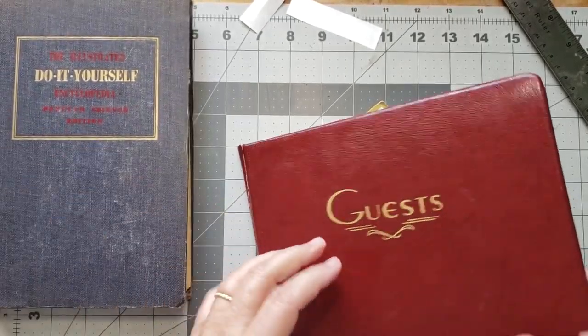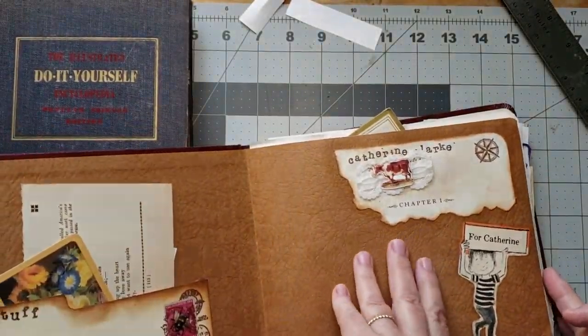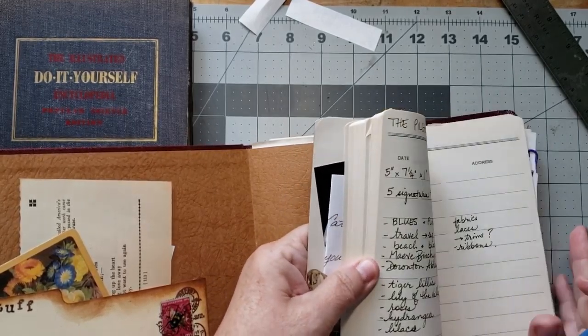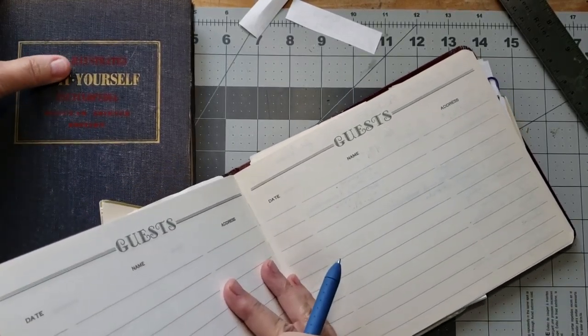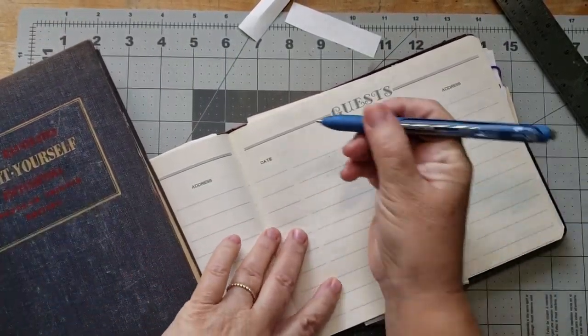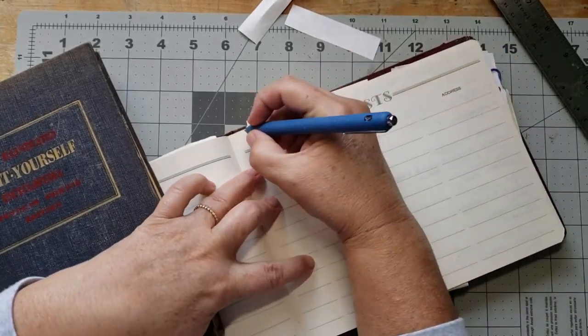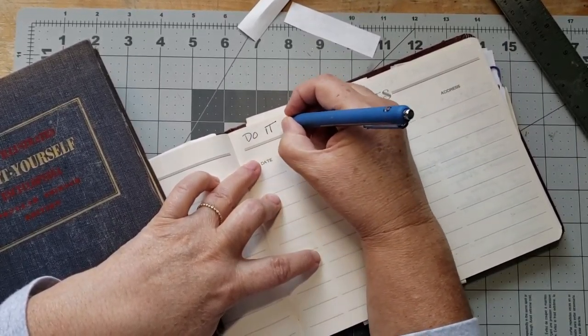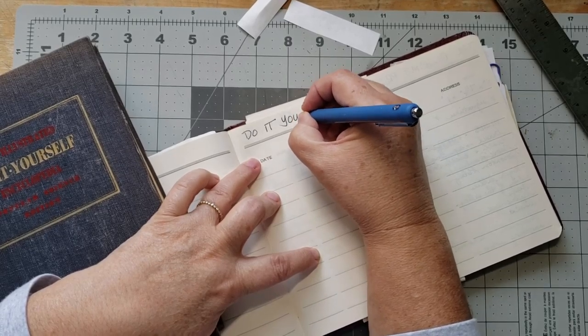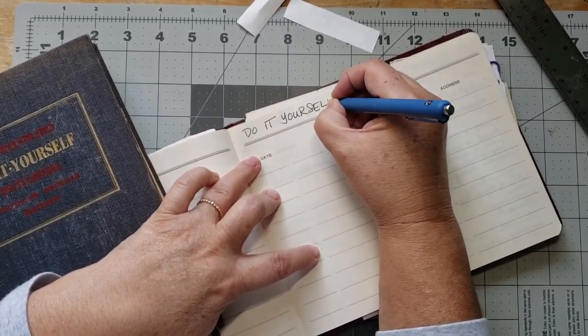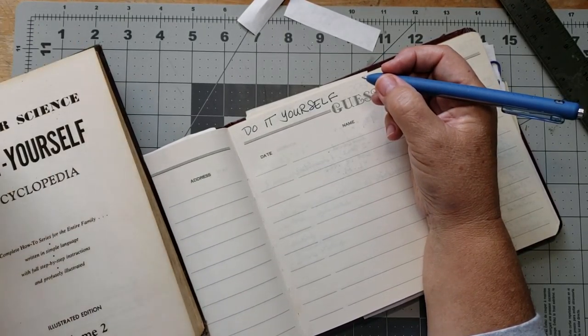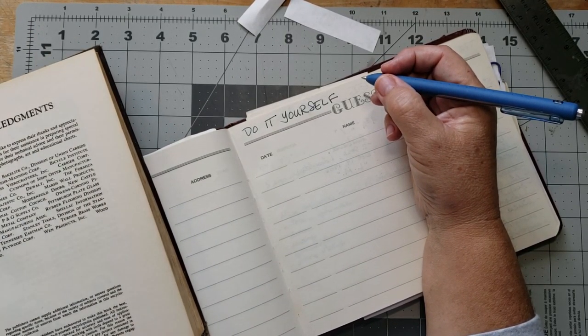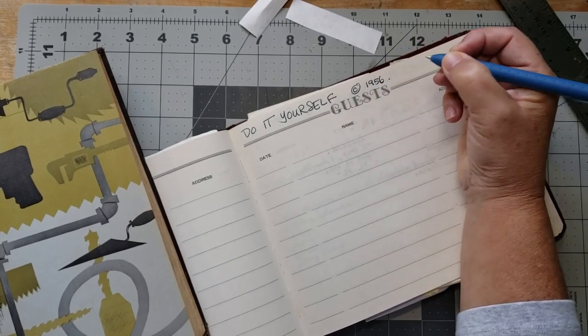And start a page for this guy. Alrighty, let's just call it, we'll call you Do It Yourself for now. And then where did I put my little tag? I read it somewhere this morning. Copyright 1956.